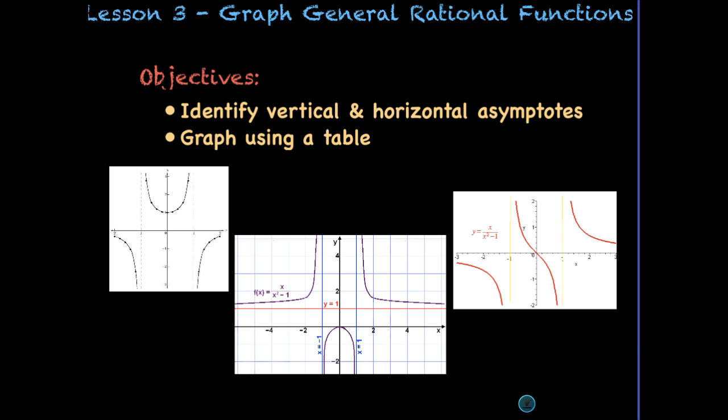In your last lesson you graphed simple rational functions through transformation — either moving left, right, up, or down in order to identify the asymptotes. When we have general functions we can no longer do that, but we can identify the vertical and horizontal asymptotes to use as a guide.